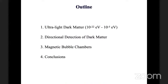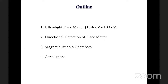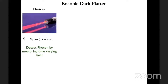In today's discussion, we're going to cover how to systematically probe what is called ultralight dark matter — dark matter with a mass above 10^-22 electron volts to about 10^-5 eV. Then we'll talk about a way to detect the direction of dark matter, which is helpful in going past the neutrino floor for WIMP dark matter. And then I'll talk about magnetic bubble chambers, a newer technological enterprise I've been engaged in.